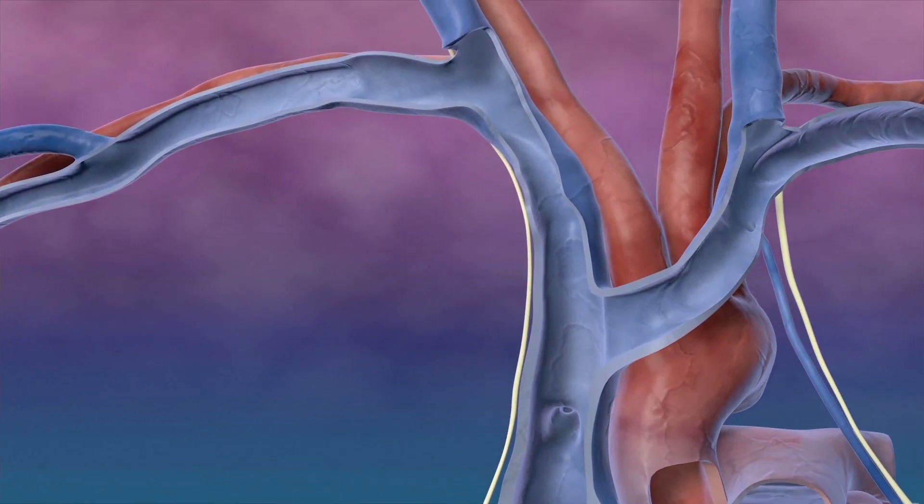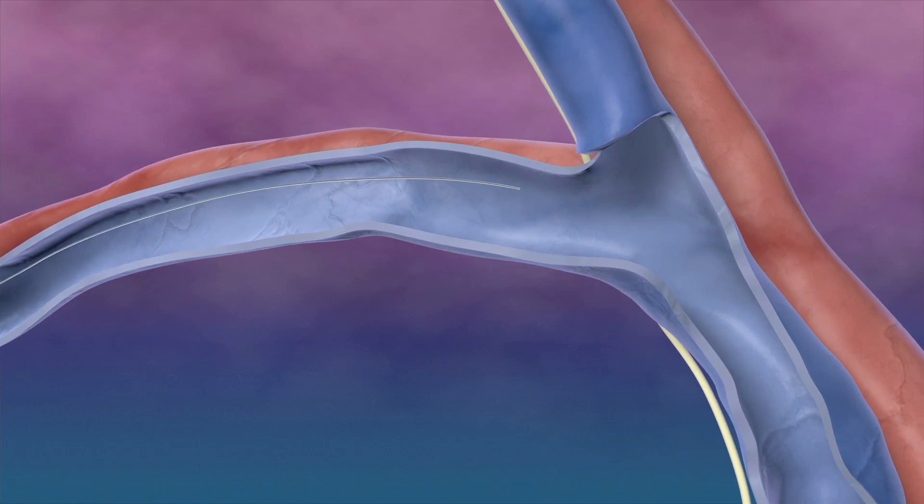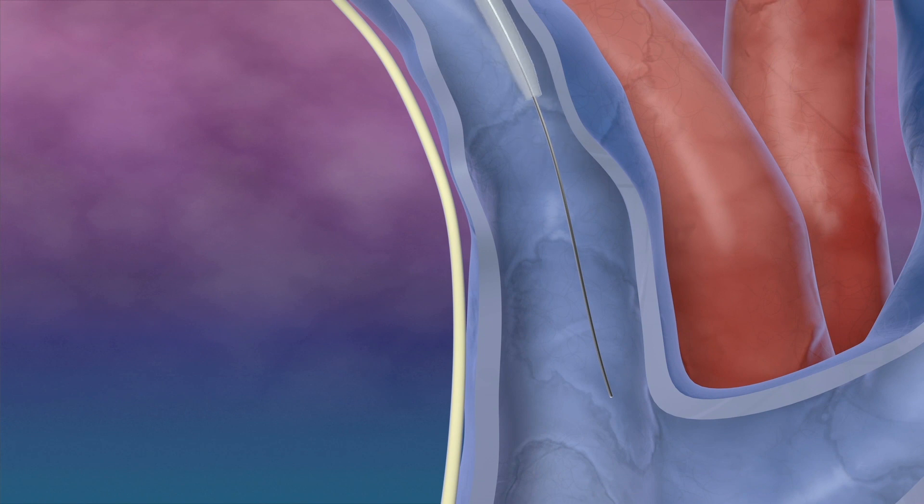Using fluoroscopic guidance, a guide wire is introduced into the venous system and advanced to the brachiocephalic junction, followed by a guide catheter.